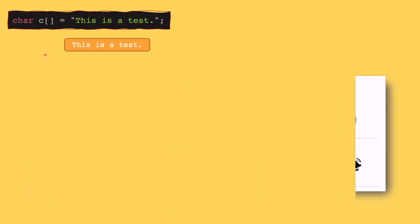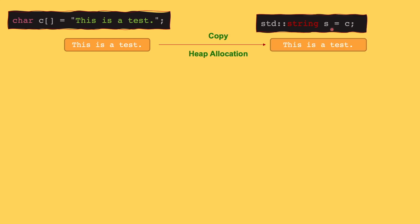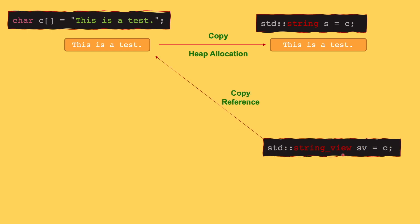In order to understand what a string view is, let's look at this example. Suppose I have a C-style string C that has this message: 'This is a test.' If you assign C to an object of type string, what happens is that the constructor of this string will do some heap allocation and basically copies all of these characters inside its own memory location. However, if we do the same thing with a string view, there's not going to be any copying. Instead, string view internally references the same buffer of our C-style string.